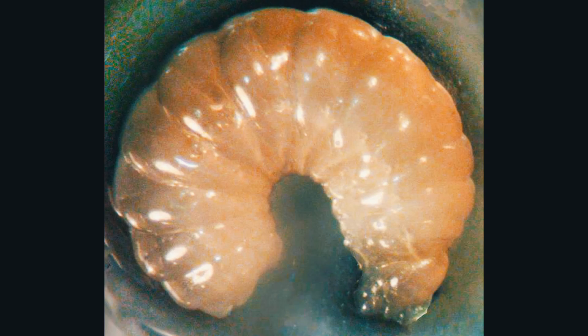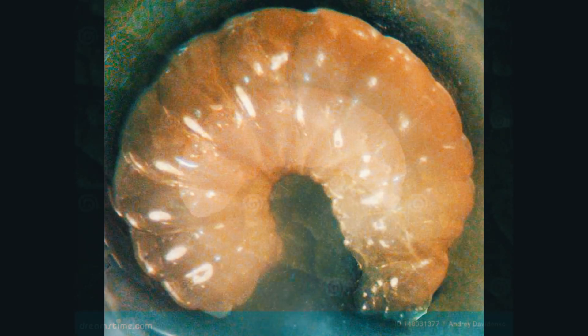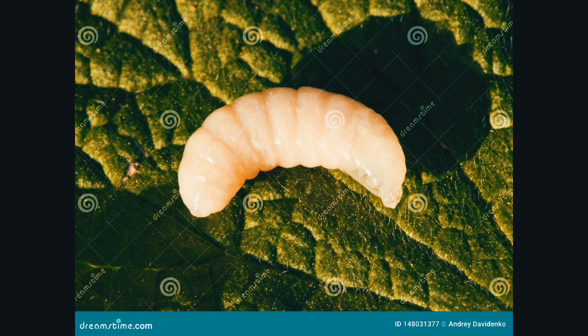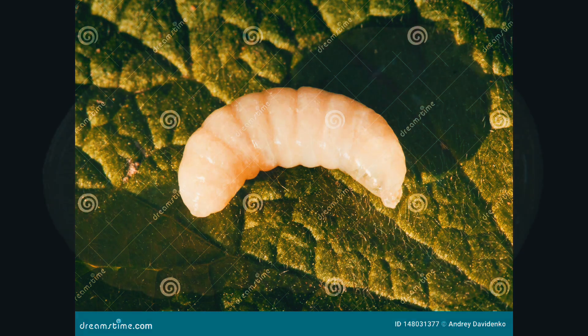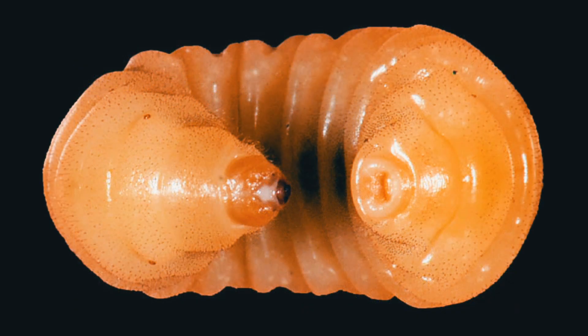Larva stage. Once the egg hatches, a larva emerges. Worker bees feed the larvae with a mixture of honey, pollen, and glandular secretions. Larvae grow rapidly during this stage.